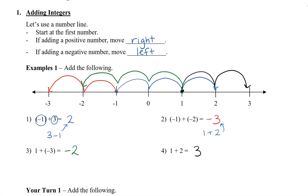In question number three, we have one plus negative three. But we can also think of this as three minus one, which is equal to two. But when we analyze the numbers, we can see that we have more negatives — negative three — so our answer will be negative two. And the last one, they're both positive, so positive plus positive is just going to give us a positive number.